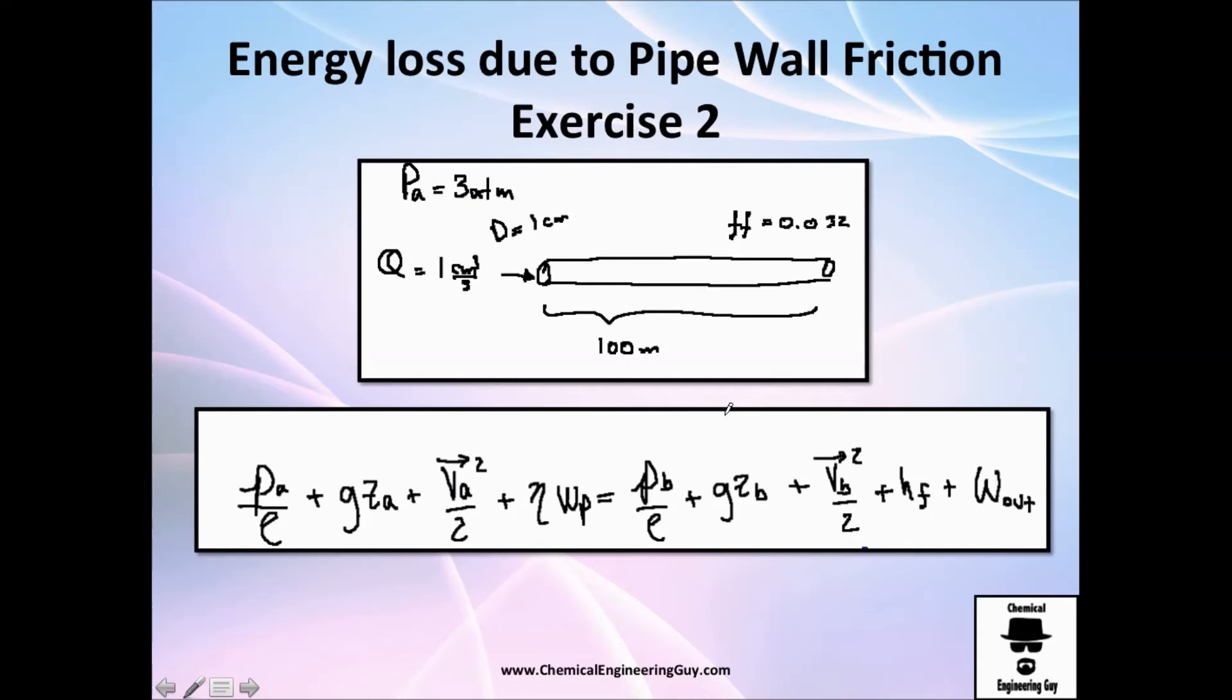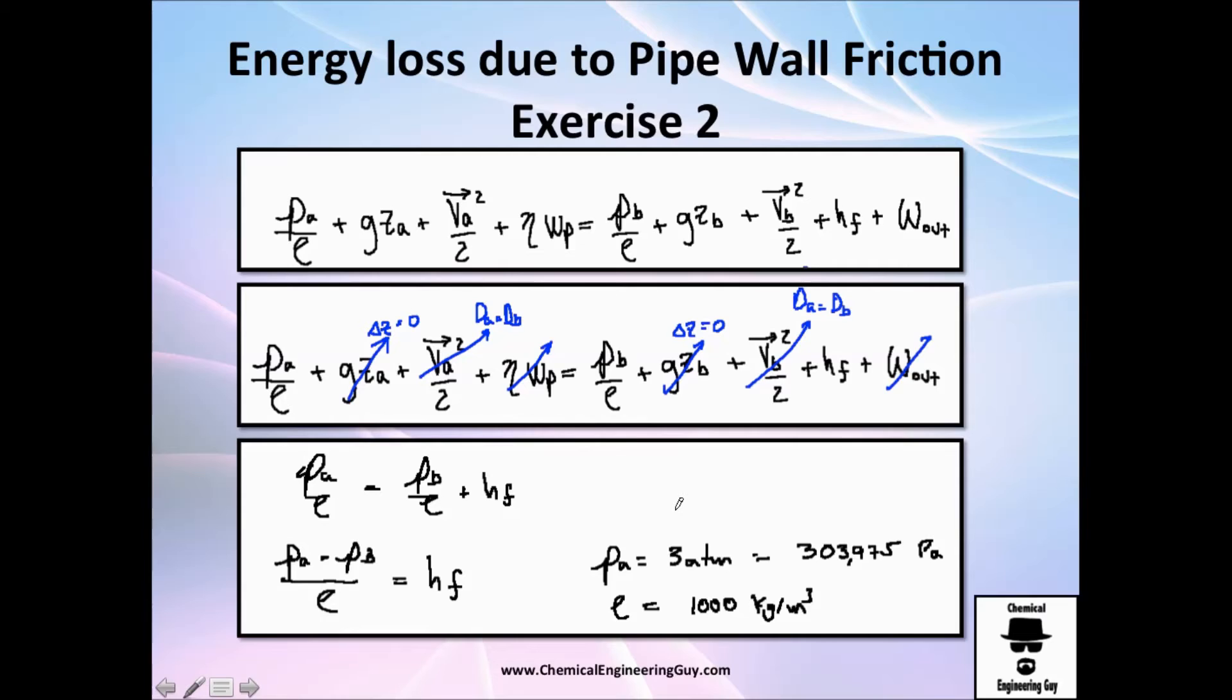How do we do that? Well, we need to apply our mechanical energy equation. So I cancel this and this because they have the same height, no pump, no workout. The velocities can be cancelled because they are the same in each one of them. We have no change in diameter. We've got it right here. Our final equation is essentially this pressure, this other pressure, and this energy loss due to friction.